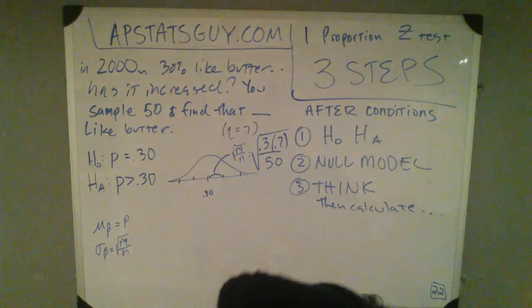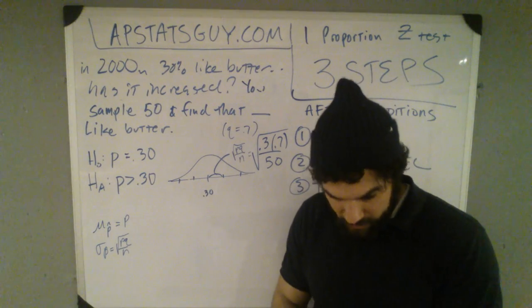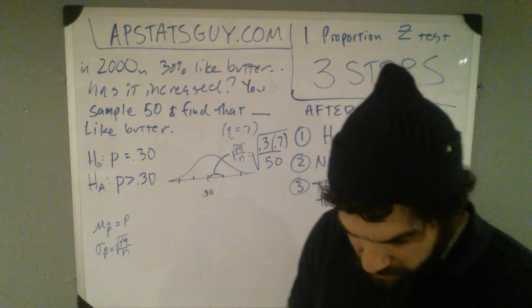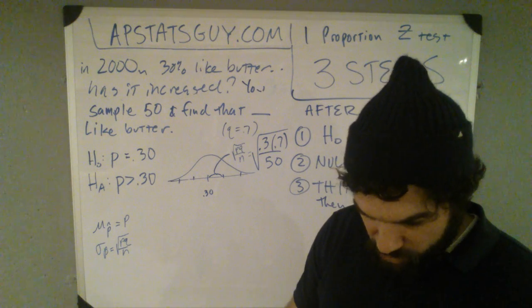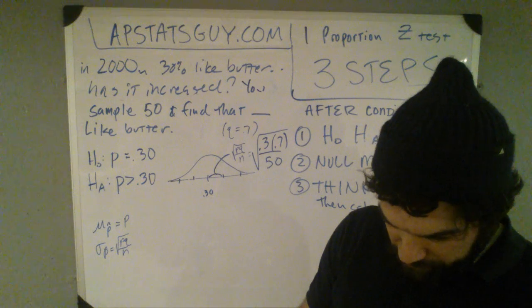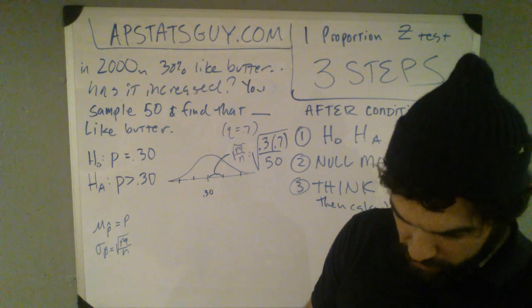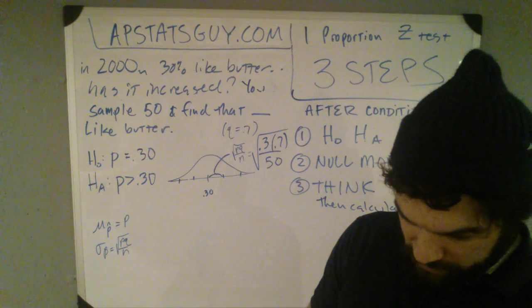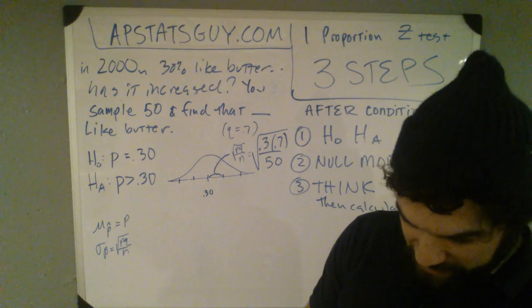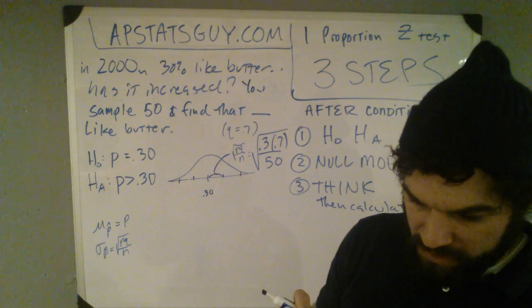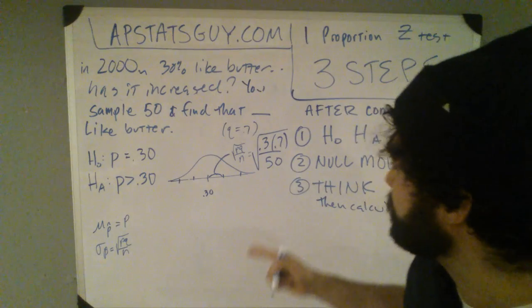So I type into my calculator, .3 times .7 divided by 50 square root .3 times .7 divided by 50 is about 6.5%.